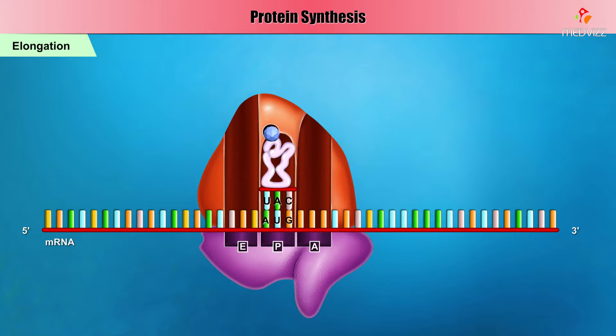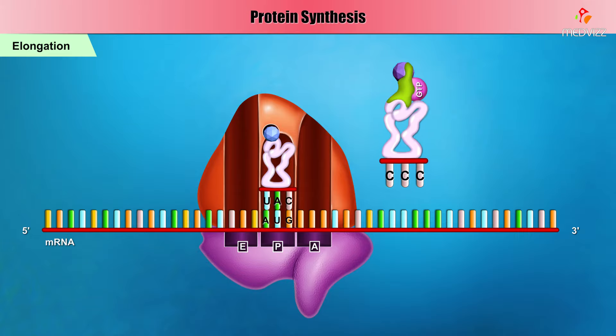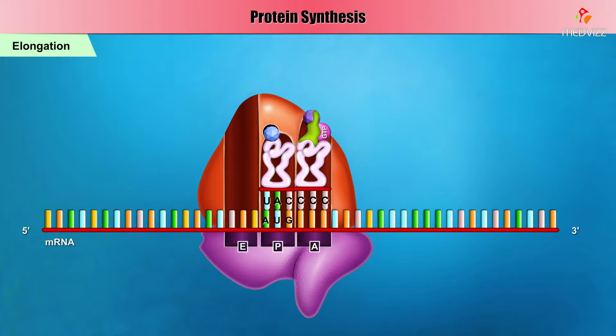Elongation involves the repetition of three steps. First, an elongation factor called EF-TU, associated with GTP, binds to free charged aminoacyl tRNAs. This complex enters the A or acceptor site. Correct selection of the tRNA complex depends mainly on codon-anticodon pairing. In this example, the anticodon CCC pairs with a GGG codon, and the tRNA carries the amino acid glycine.